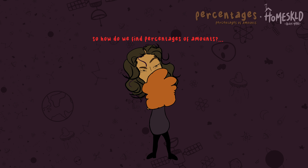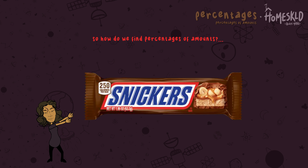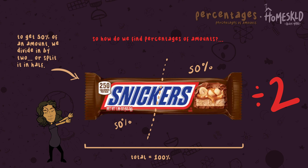So how then do we calculate them? Here we have a Snickers chocolate bar. Now if I wanted to be fair and split it equally between both you and I, I would divide it into 2. This is how I would calculate 50% of any amount. Each piece we both now have is 50% of the original amount.